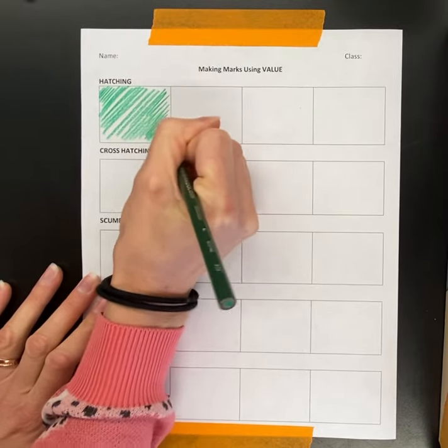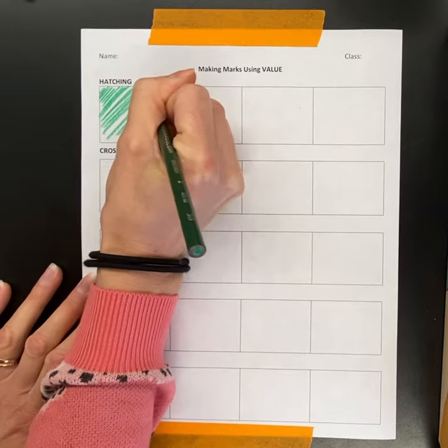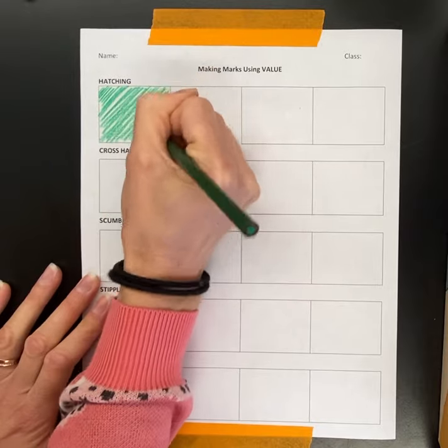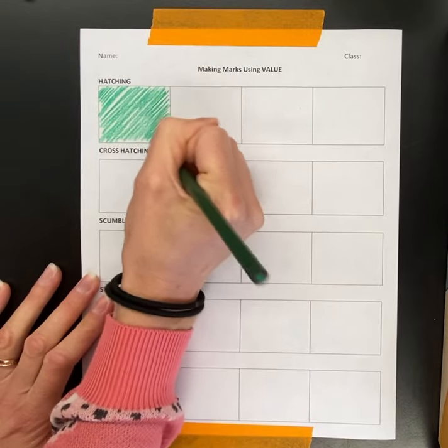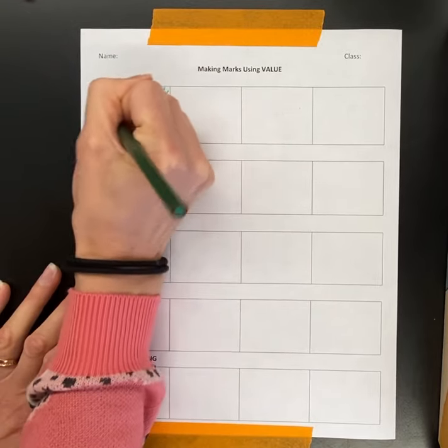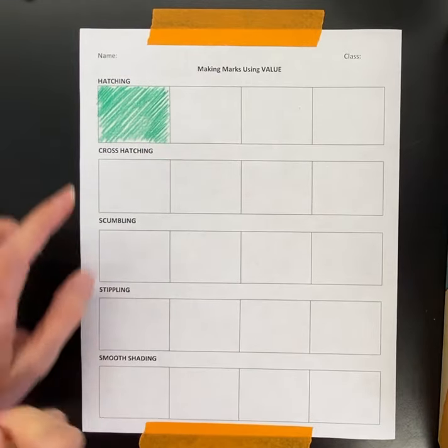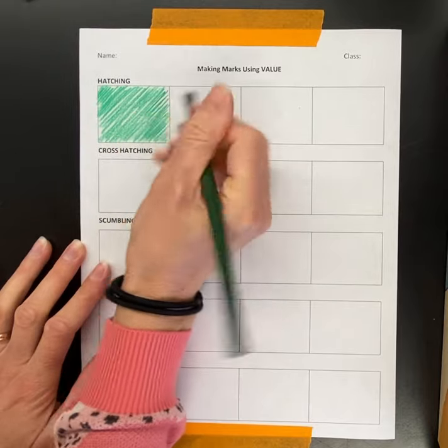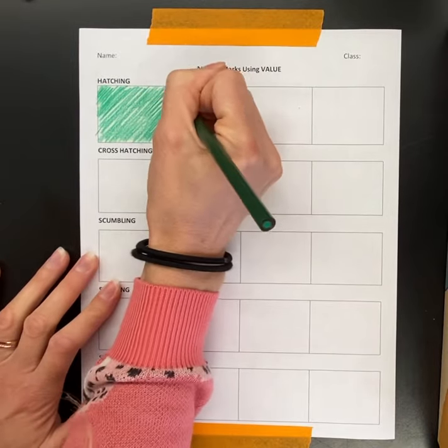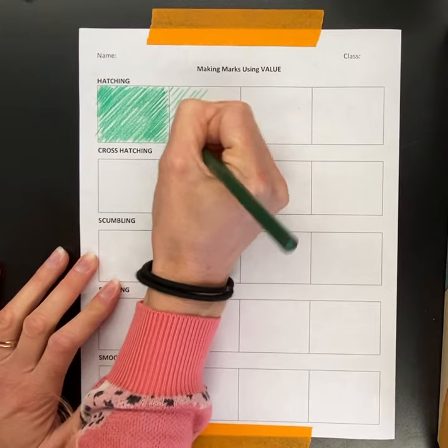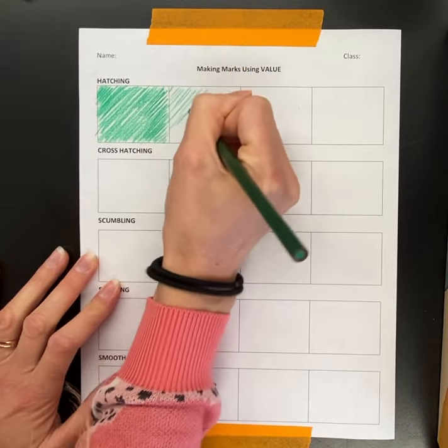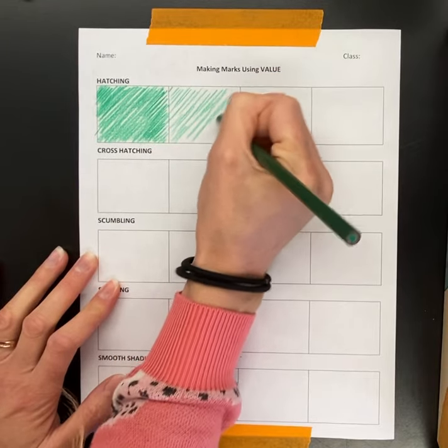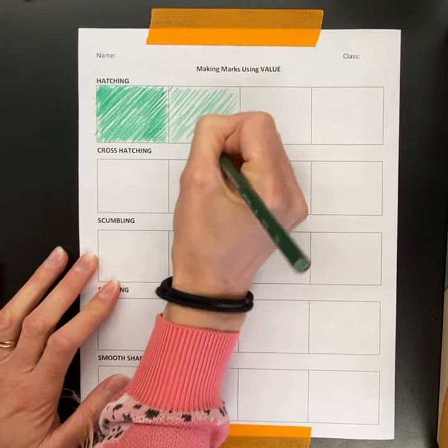I'm filling up the square or the rectangle so it looks almost solid but you still can see the texture of the lines. For the next one I'm going to be doing a little more space between the lines. The idea is from a distance it would look a little bit lighter because there's more space between the lines.